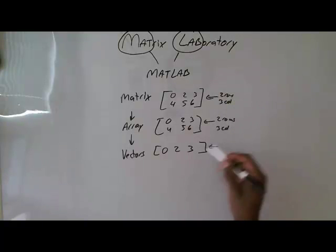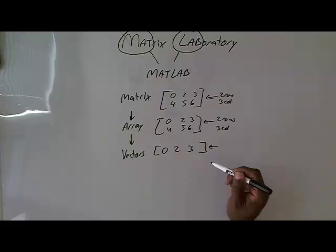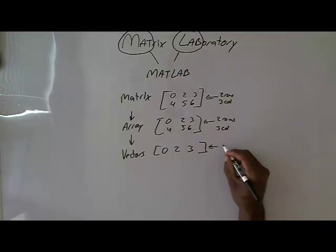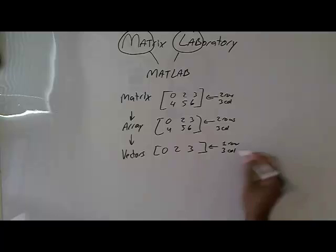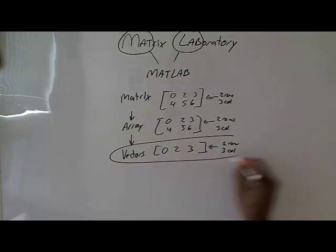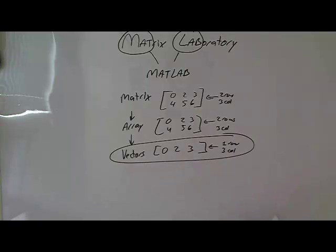But when we refer in this class and in CS 1371, when you refer to a vector, you're referring to a matrix or an array that only has one row and then multiple number of columns, depending on how much data you have. And so vectors is where we're going to start here.